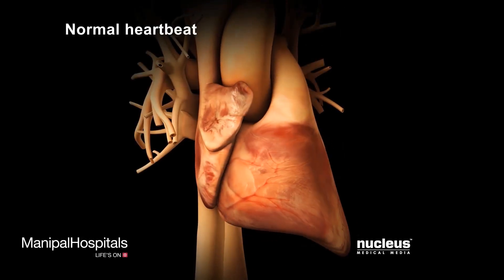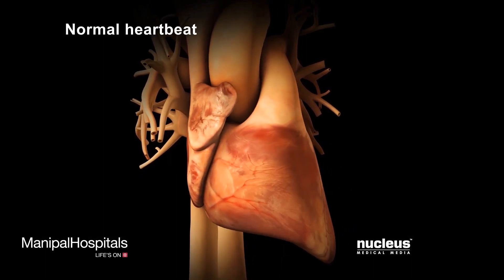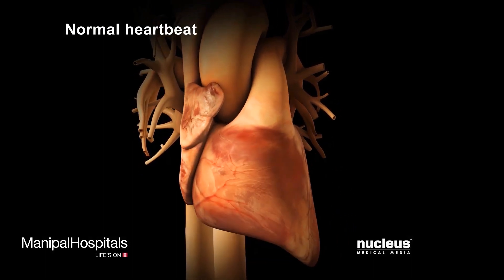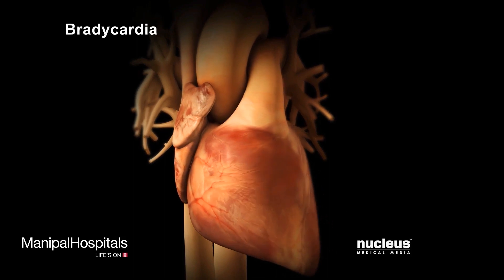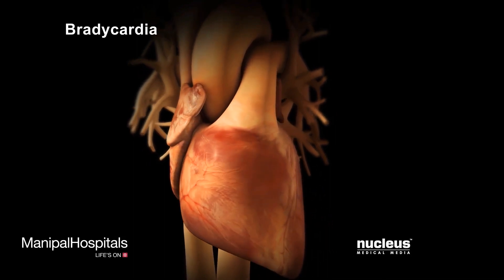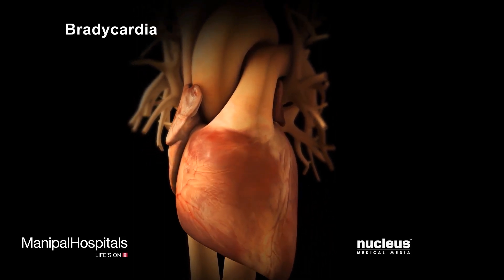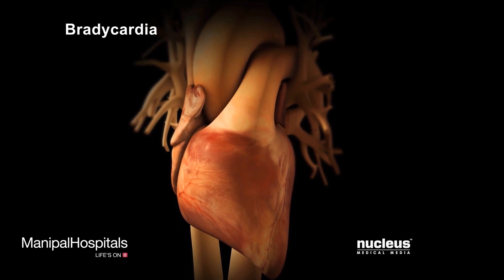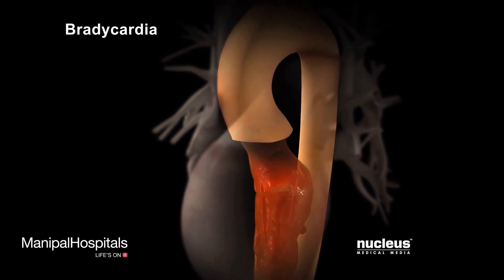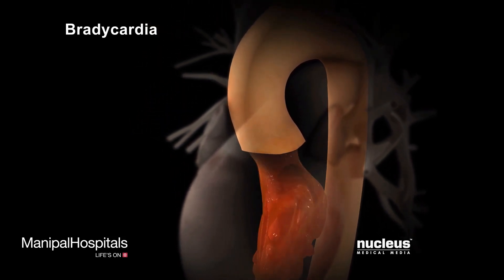Sometimes, problems with the SA node or problems with the pathway of the electrical impulses to the ventricles can cause the slow heartbeat in bradycardia. If the heart beats too slowly, the body may not receive enough oxygen-rich blood.